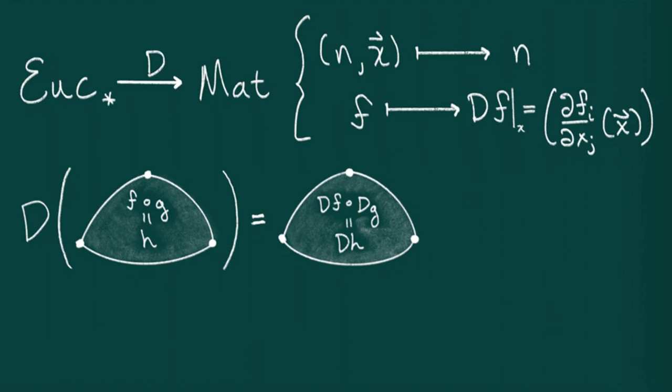Moreover, the chain rule reflects the fact that this construction is compatible with their higher dimensional structure. Note that this compatibility is essential for computing derivatives. Finally, note that the derivative sends the identity map of an n-dimensional Euclidean space to the identity matrix. This is because partial xi partial xj evaluated at any point x is delta ij.